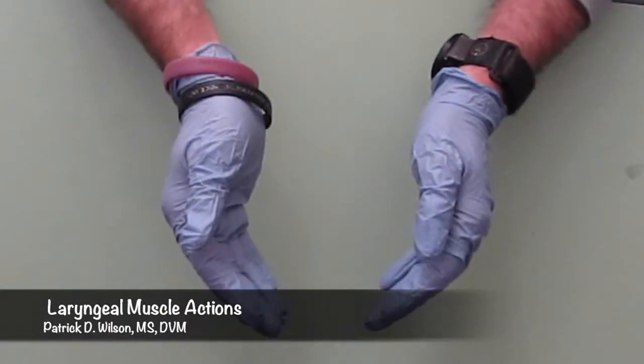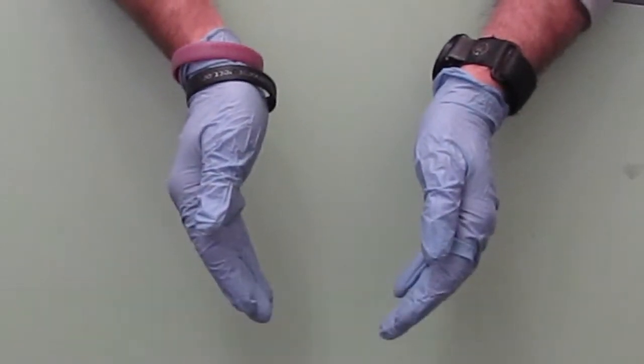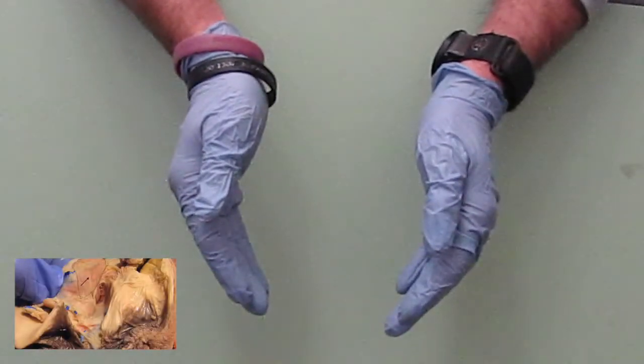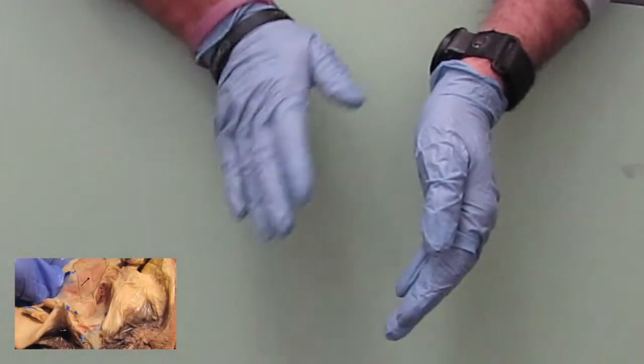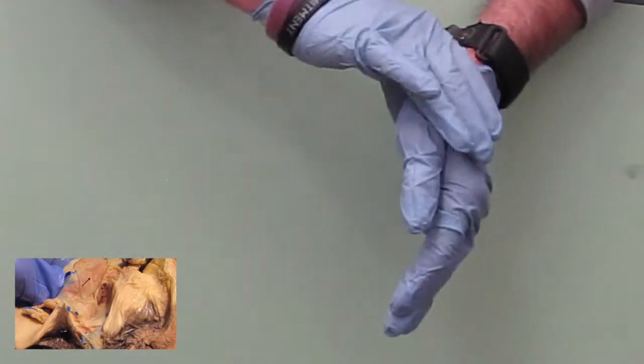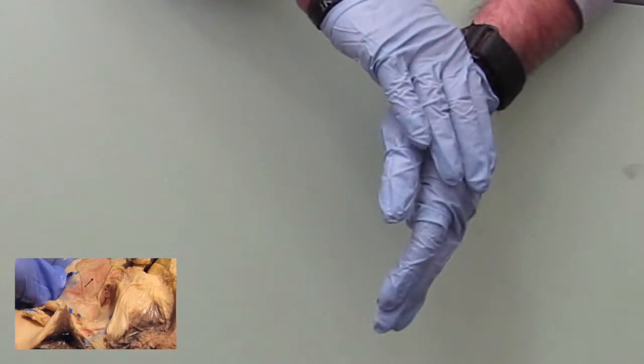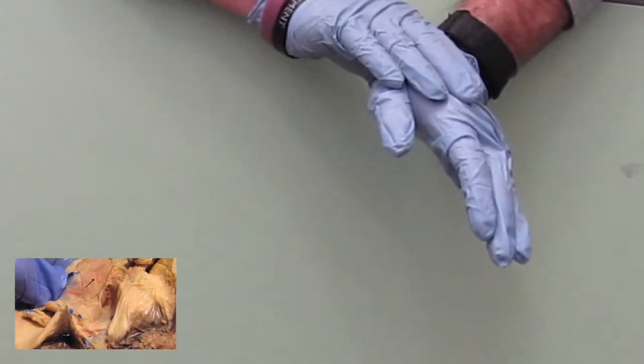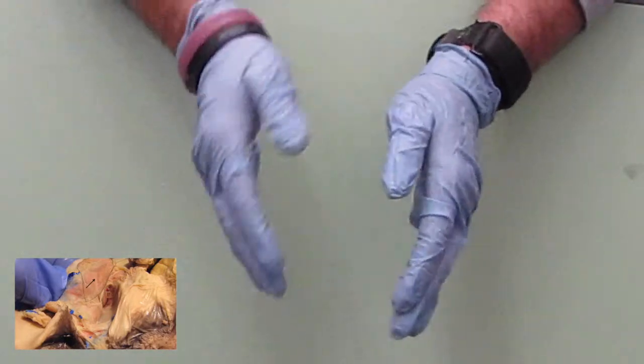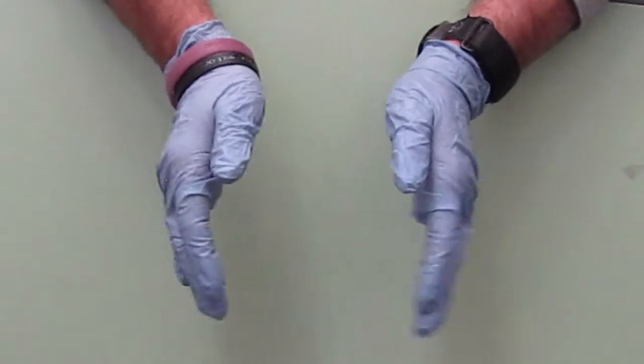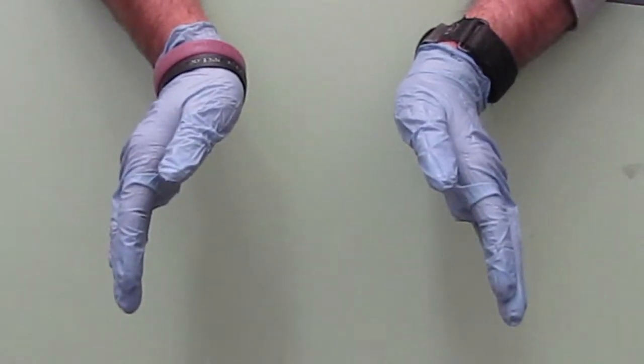Okay, so now let's just pretend that my hands here are the arytenoid cartilages. The cricoarytenoid dorsalis muscle, its fibers are going to come this way over to attach to the muscular process on the arytenoid cartilage. So when it contracts, it's going to have this kind of a pull, so it's going to pull the arytenoids outward, opening the airway.